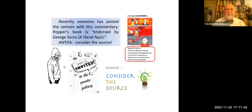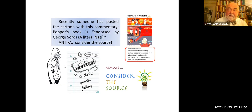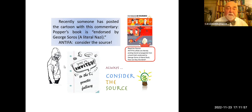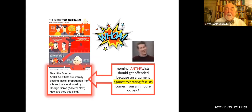Recently someone has posted a cartoon with commentary: Popper's book is endorsed by George Soros, who is described as a literal Nazi. Therefore, don't listen to what Popper says about the paradox of tolerance. Always consider the source. Well, that'll make your head spin. Let me get this right: nominal anti-fascists should get offended because an argument against tolerating fascists comes from an impure source?